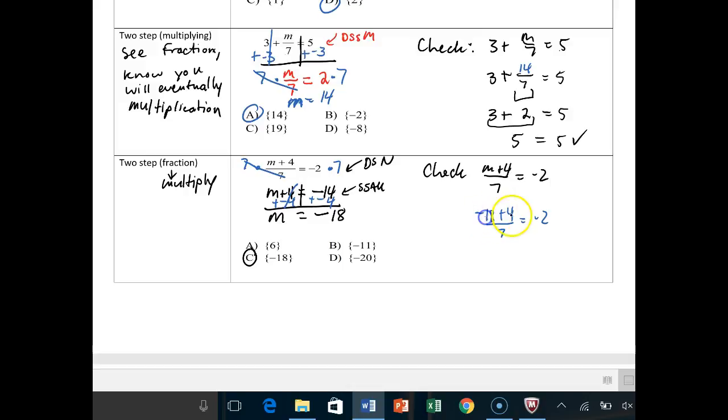And then what is negative 18 plus 4? It's negative 14 over 7 equals negative 2. And then obviously this is a DSN, different signs negative. So negative 14 divided by 7 is negative 2 is equal to negative 2. All right, that's it for part 1.